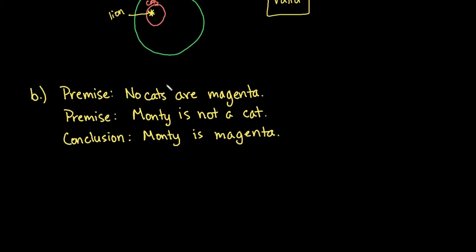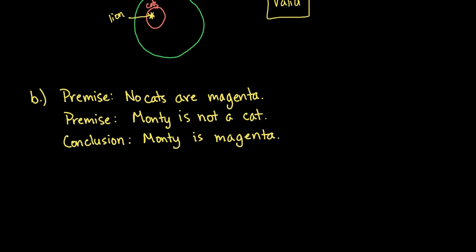Let's look at another statement. For this one, we have that no cats are magenta. So that tells me that I have a circle that represents cats and I have a circle that represents things that are magenta. And these two circles do not overlap because no cats are contained in the magenta, so we know that they're going to be separate circles.